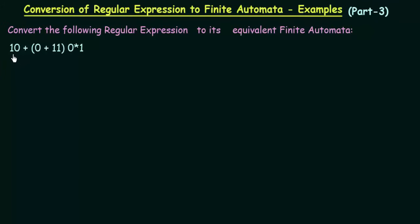Here we have '10' and we have a plus symbol, that is OR, and we have a sequence that follows. What I will do is for my first step I will treat this '10' as a single symbol, and '0 + 11' and '0 closure 1' — this whole thing I will treat as another symbol.